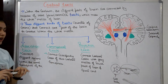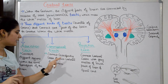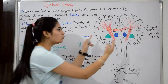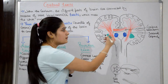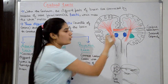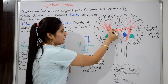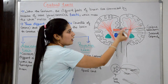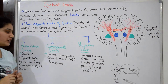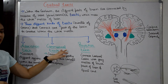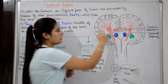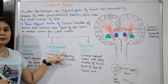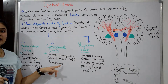Commissural tracks connect corresponding areas of the two cerebral hemispheres. So these connect the two hemispheres together. It is called commissural because it acts like a bridge connecting the two hemispheres — that's why it is called commissural tracks.